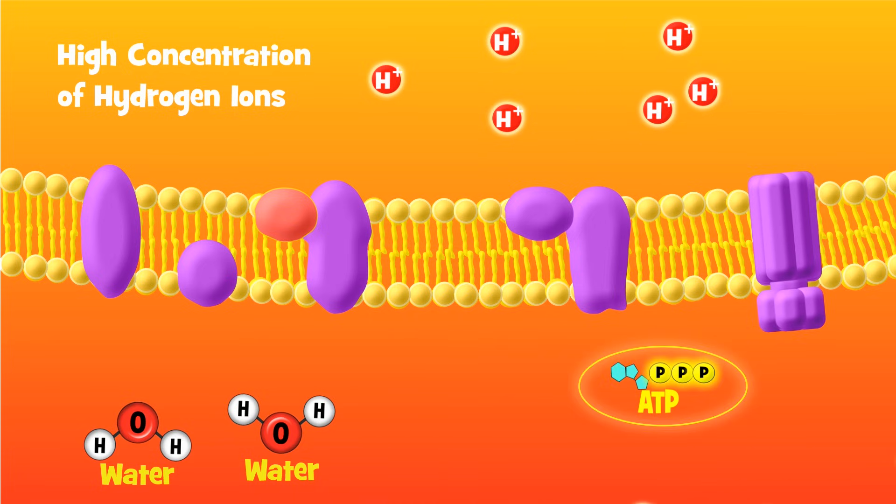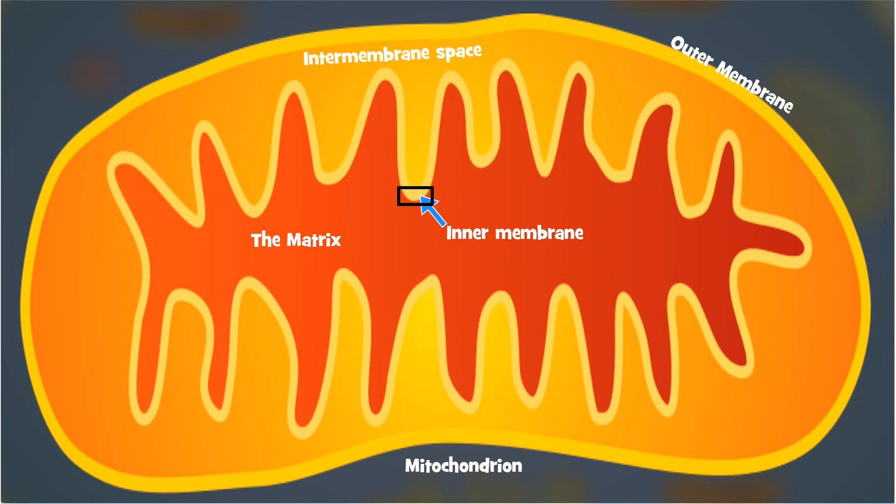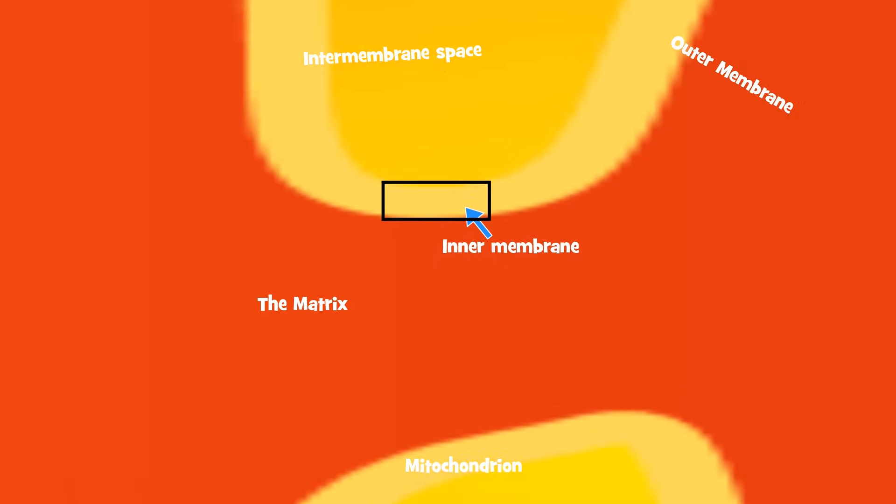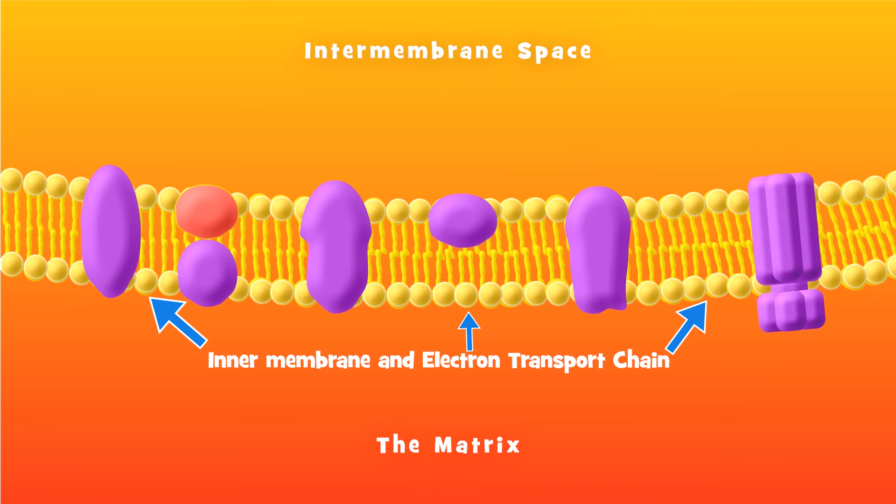The electron transport chain is actually a series of proteins and other molecules embedded in the inner membrane of the mitochondrion. These molecules transport electrons, hence the name. Let's zoom in on this inner membrane to see the electron transport chain in more detail.